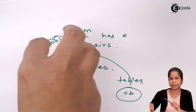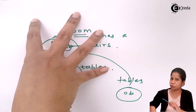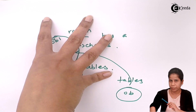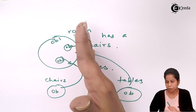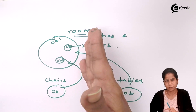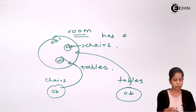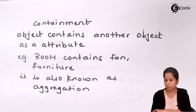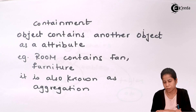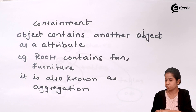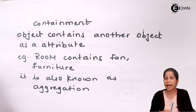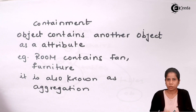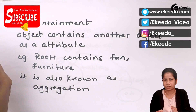Containment basically allows me to build objects separately and then include them or use them inside another object as an attribute, giving reusability. This is one kind of inheritance. Containment means an object that contains another object inside it as an attribute — for example, a room contains a fan and furniture. It is also known as aggregation, and the relationship between the two objects is always a "has-a" relationship.